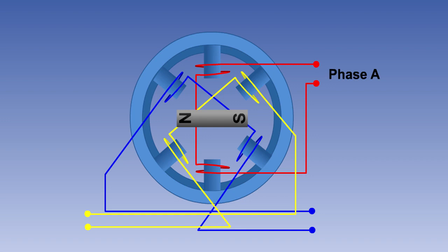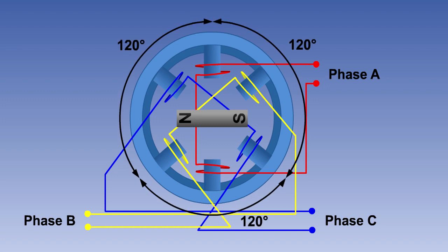The phase windings are named A, B and C. They are mechanically arranged to be at 120 degrees to each other, in the sequence A, B, C.